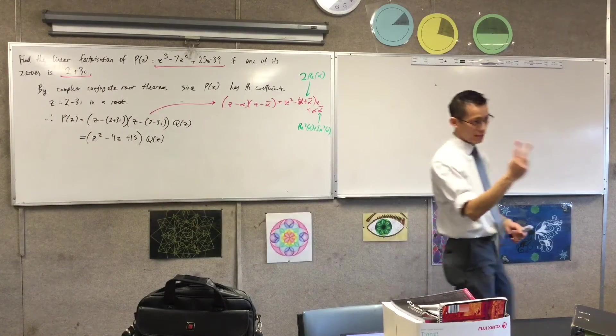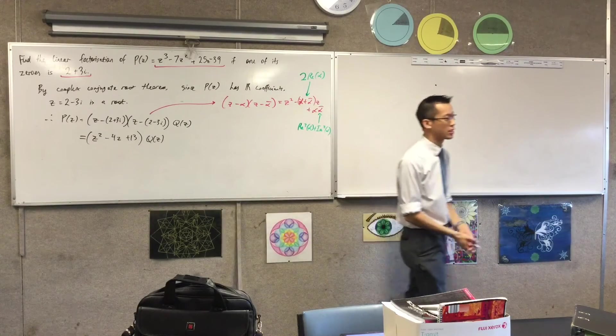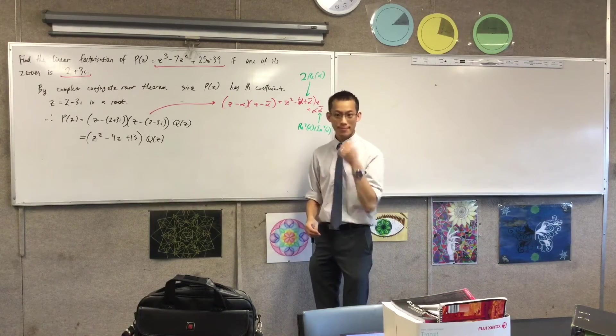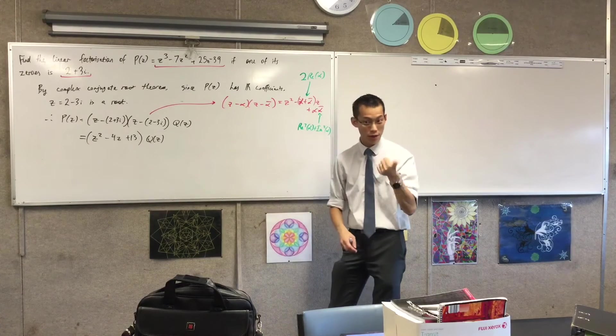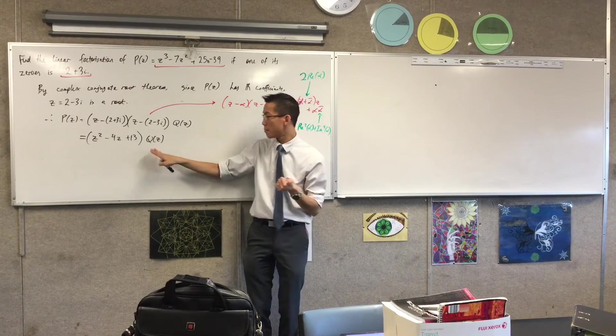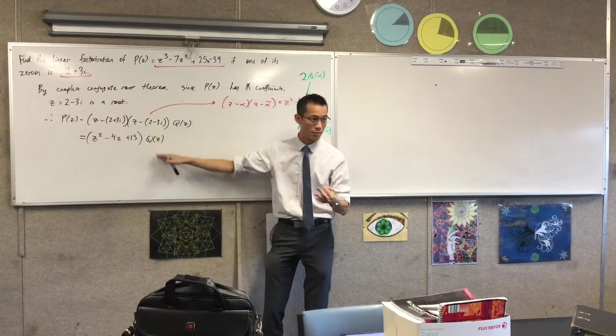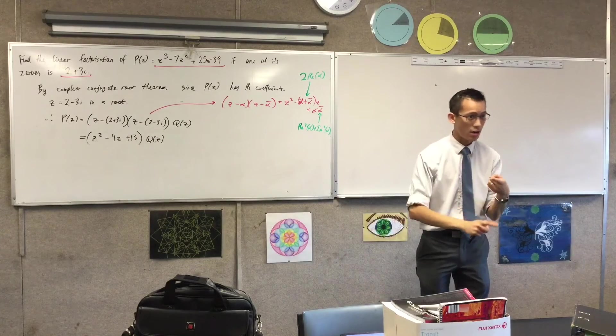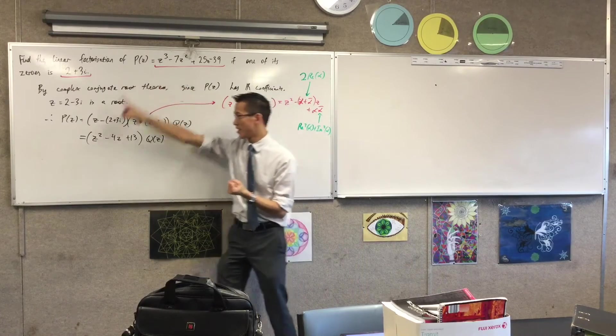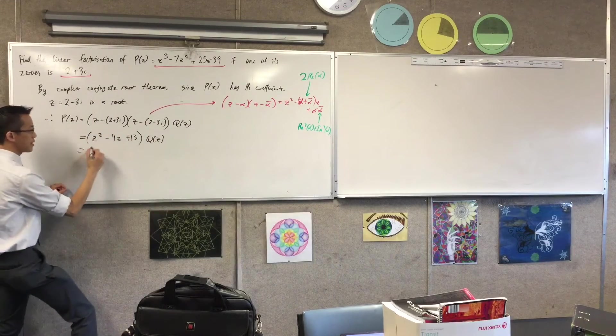Now at this point there are one of two things we can do. There are two paths to finish out the question and find out what this Q(z) is. Anyone want to suggest what one of the paths might be? Look at the constant term and say you need 3 to get 39. The first method is—I need to actually rewind a little bit. The first method is to recognize this must be a linear factor. It must be linear because I've already got degree 2 here. This has to multiply to degree 3, so this must be degree 1. It's not only linear, I also know it's monic. How do I know it's monic? This is monic, this is monic, that must be monic.